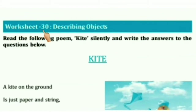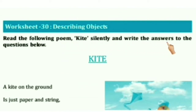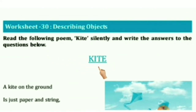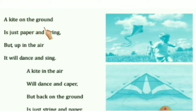Worksheet 30 – Describing Objects. Read the following poem, 'Kite', silently and write the answers to the questions below. The poem begins: A kite on the ground is just paper and string, but up in the air, it will dance and sing.